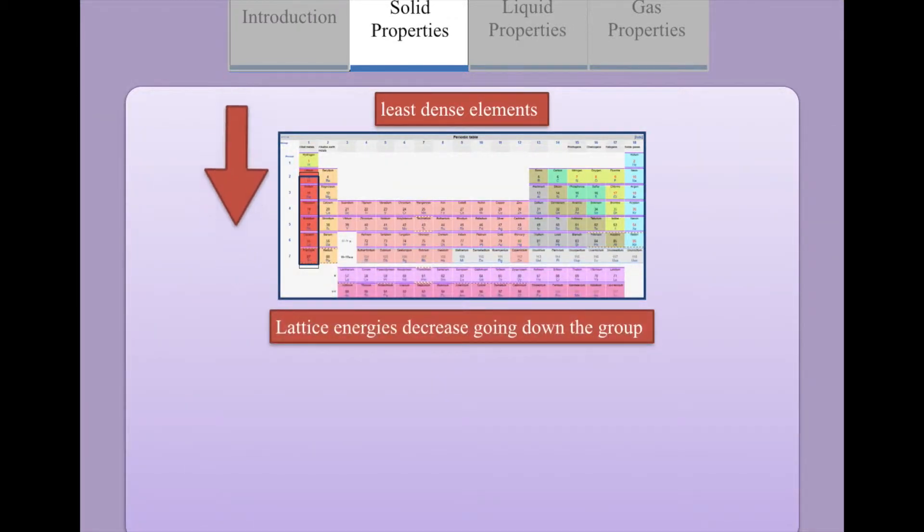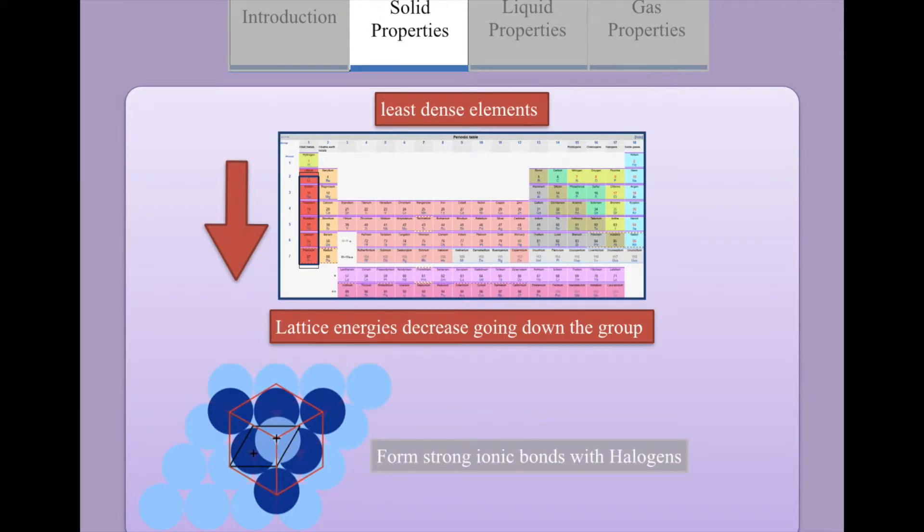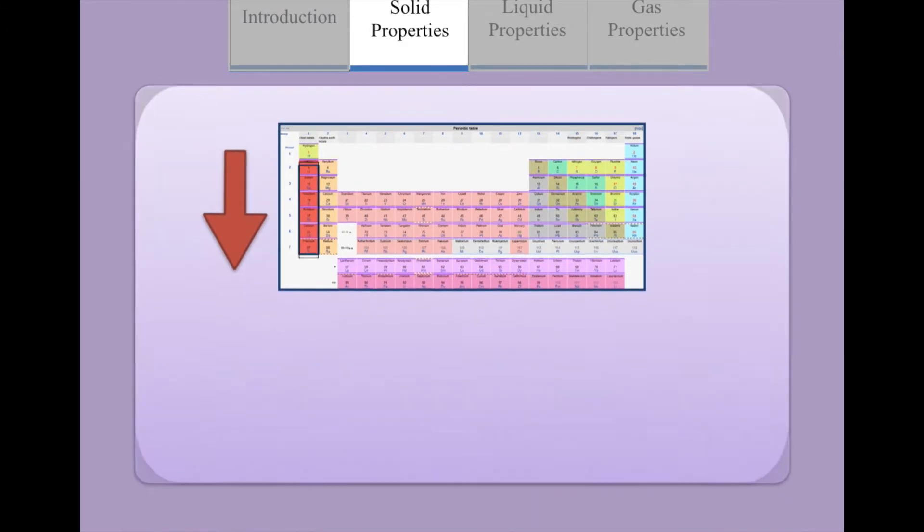Their lattice energy decreases going down the group as the electrons begin to become more delocalized, and they form strong ionic bonds with halogens, for example sodium chloride.